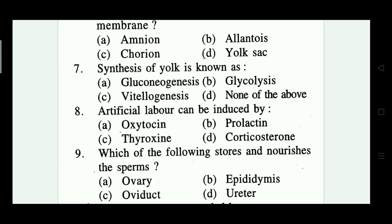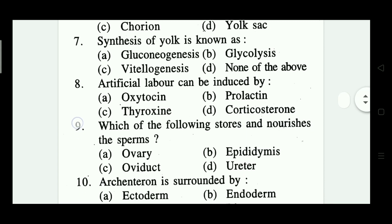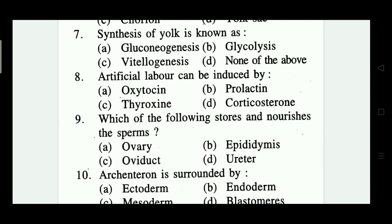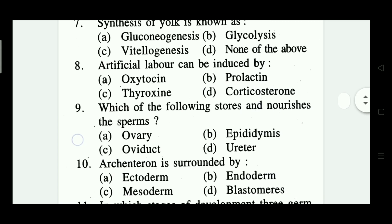Question number eight: artificial labor can be induced by — oxytocin, prolactin, thyroxin, and corticosterone. Which one is correct? It is A — oxytocin is the correct answer.